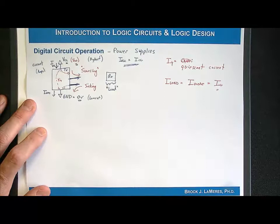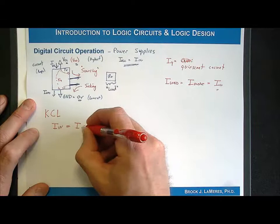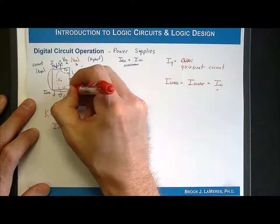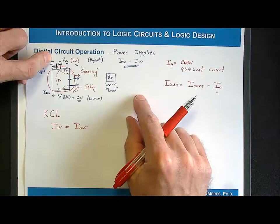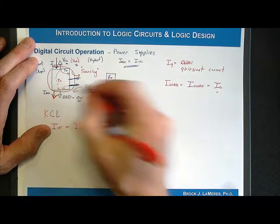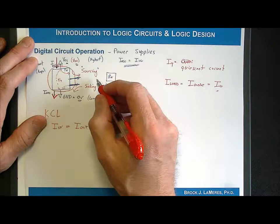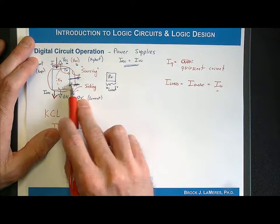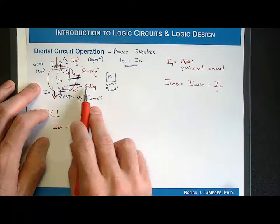There's a rule called Kirchhoff's Current Law, which states that the current into any system equals the current out of any system. If you draw a circle around a transmitter and look at all sources of current coming in, they must equal all sources going out. I_VCC is current coming in; I_GND is the exit point. The quiescent current always flows from I_VCC to I_GND, but the output situation is dynamic — you're either sourcing or sinking to a load. The number of outputs and whether they are sourcing or sinking dictates the total power supply current.